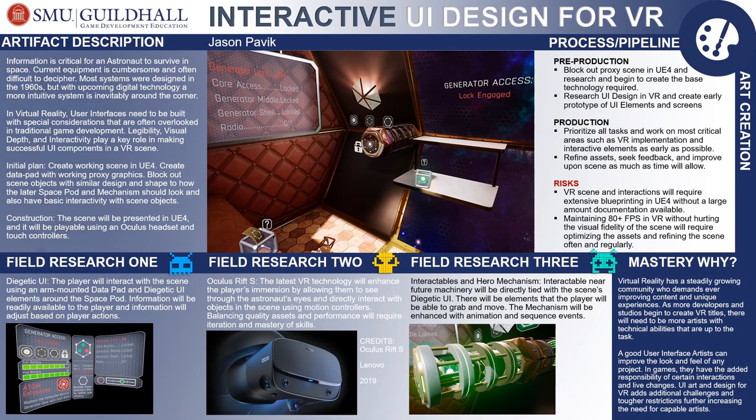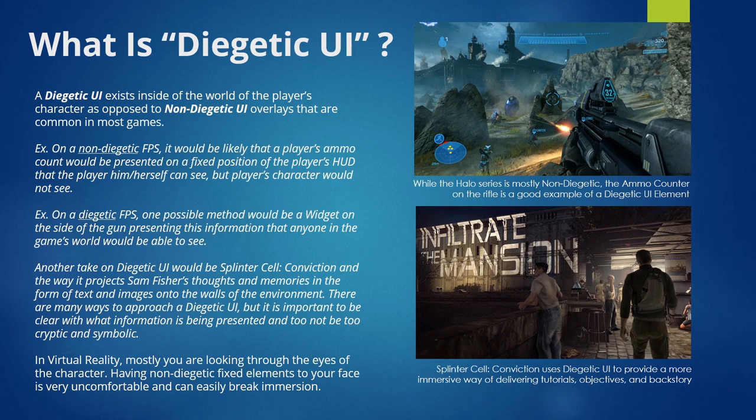My third area of mastery is interactables, mainly the generator, which is a hero object. It was especially important in this mastery to focus on making my interactions utilize the tools provided by virtual reality and having diegetic UI elements. In a diegetic user interface, the UI elements exist inside a world where both the character and the player see the elements in the same way.